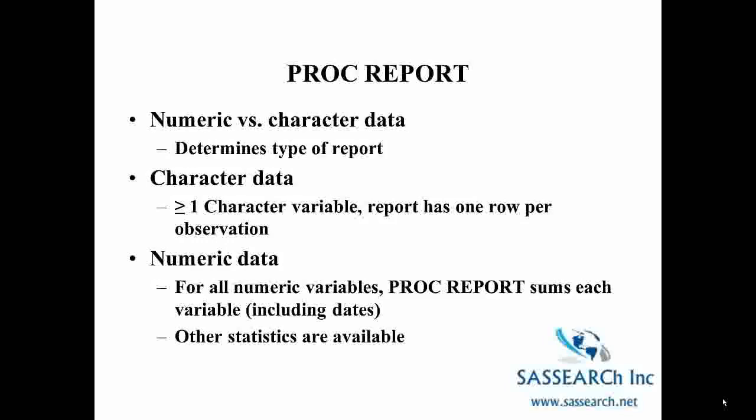The type of data you have determines the type of report SAS will generate. If you have one or more character variables, the report will appear as one row per observation, which is what we see with PROC PRINT. If your report is done on all numeric variables, then PROC REPORT sums each variable, even dates. There are other statistics available that can be requested, but PROC REPORT does not show one row per observation if only numeric variables are listed.